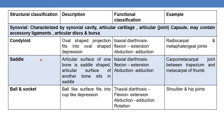The next is the saddle joint. Here, the articular surface of one bone is saddle-shaped and the articular surface of the other bone sits into it. It is also a biaxial diarthrosis, permitting flexion and extension, and abduction and adduction. An example is the carpometacarpal joint between the trapezium and the metacarpal of the thumb.